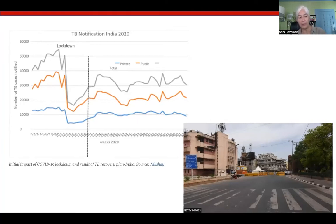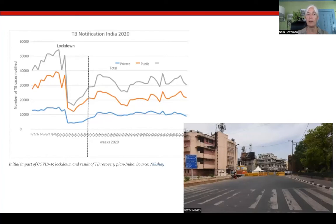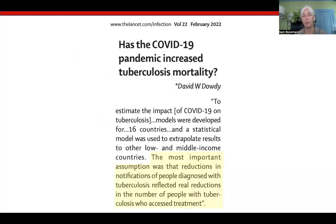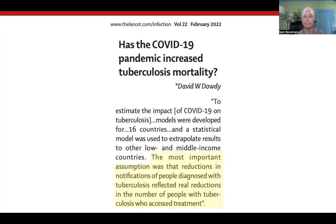WHO reasoned that the fall in notifications was due to people with TB who were being missed and therefore not adequately treated. And because of this failure to diagnose and treat, they assumed that mortality would increase. So the estimates we saw in the previous slide are based on the assumption about the number of people who likely went undiagnosed and the death rate in untreated TB. But as David Dowdy, a professor at Johns Hopkins, notes in this editorial in The Lancet, the WHO team made a very strong assumption that the number of actual TB cases had not declined and that the observed fall-off was entirely related to people being unable to access care and therefore to be notified. But was this true?